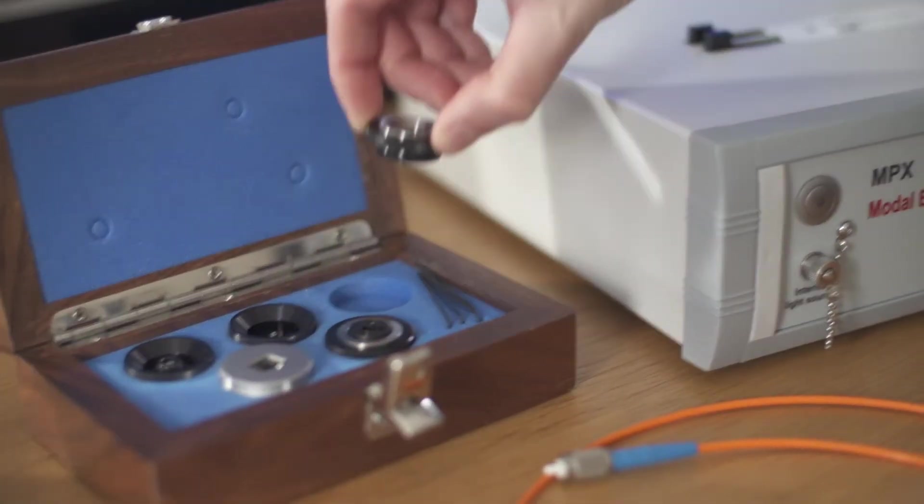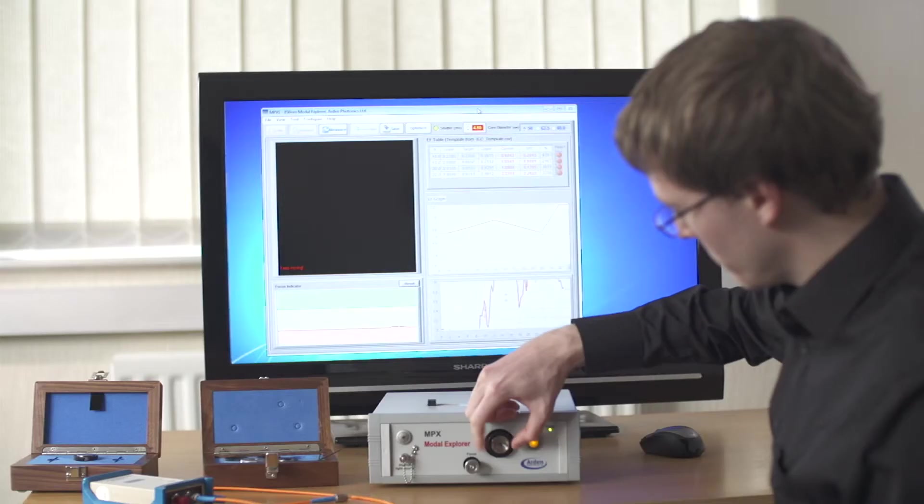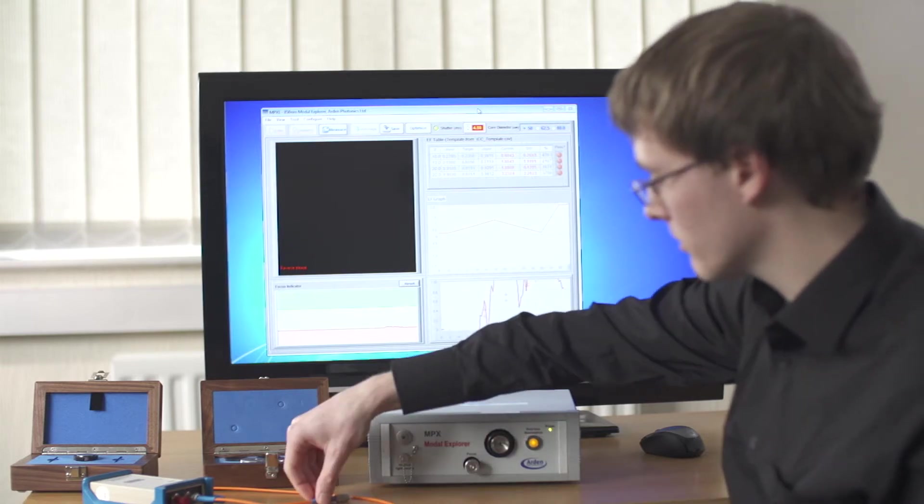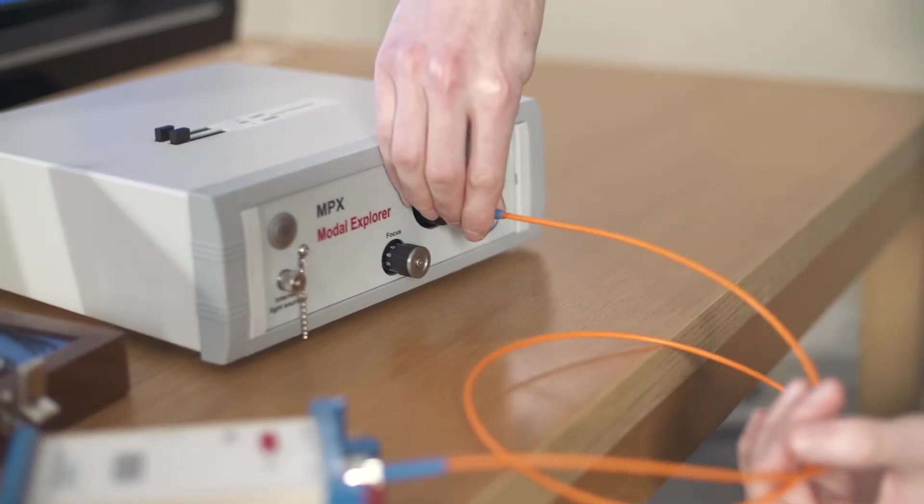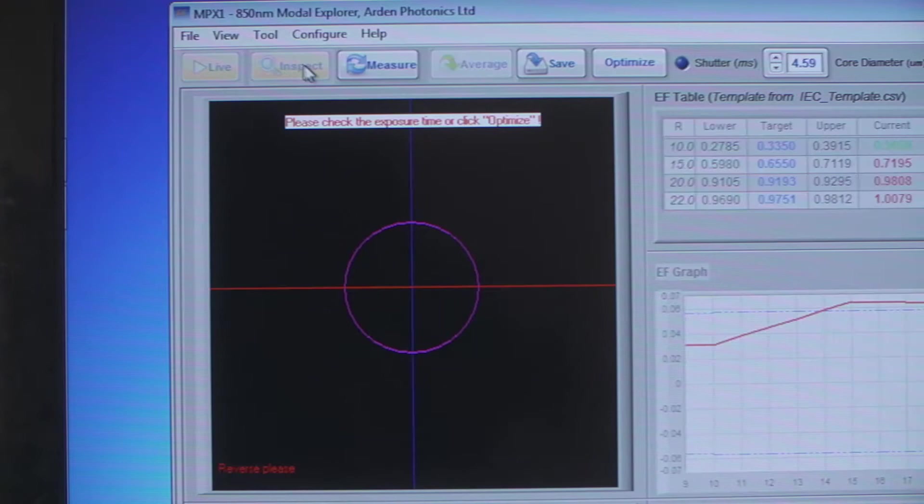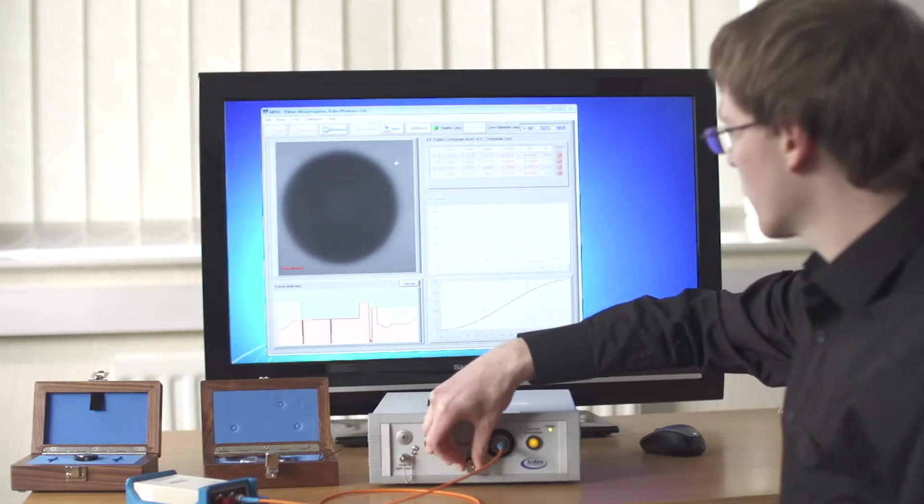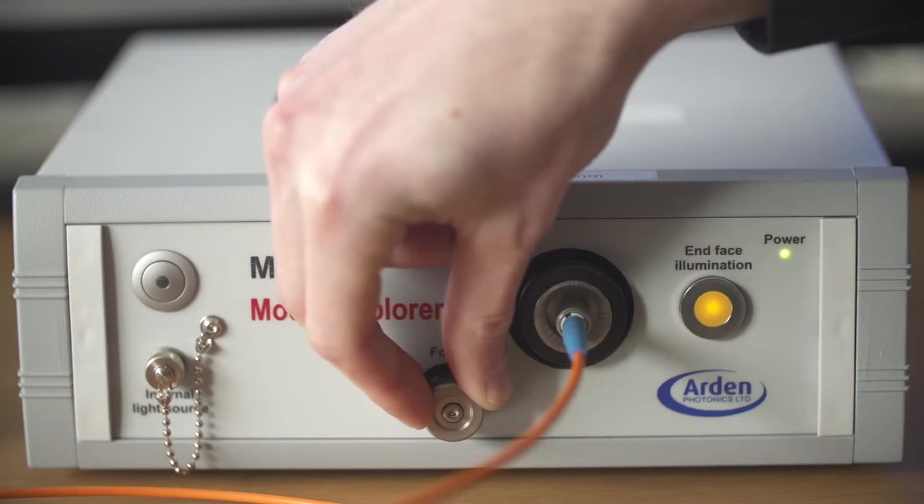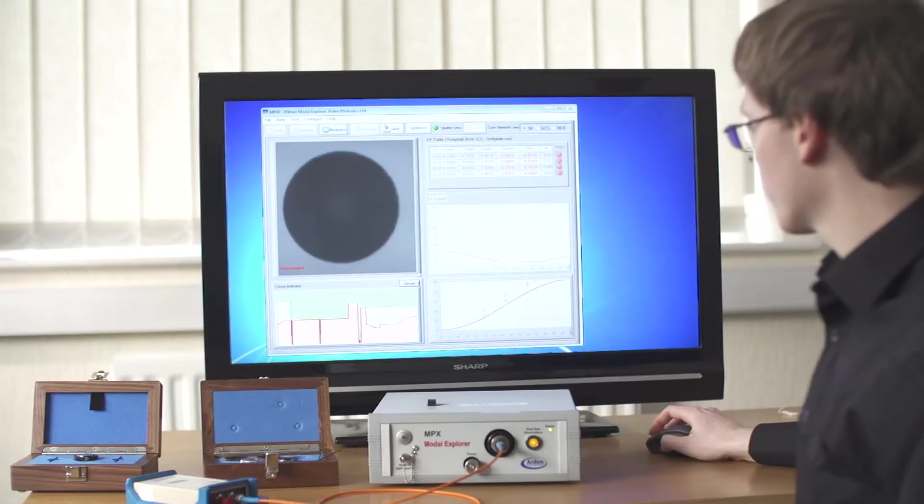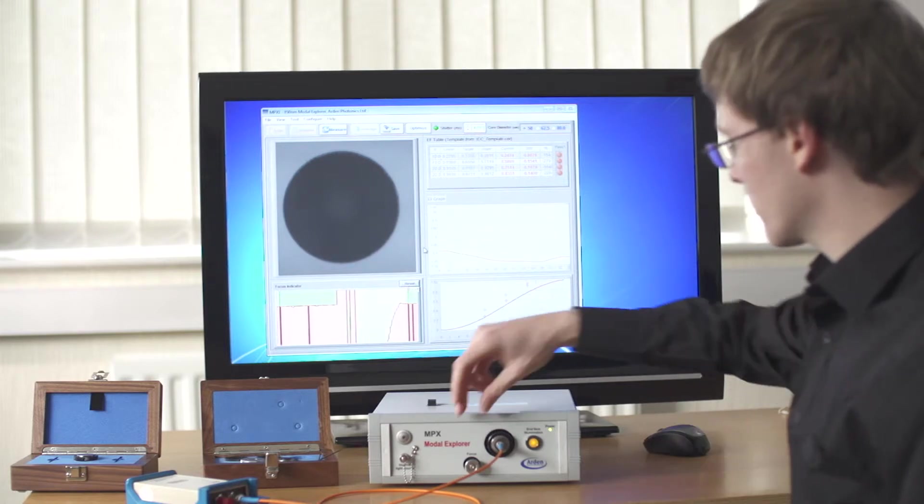The Modal Explorer comes with a variety of adapters to connect your power source to the instrument. Insert the connector into the adapter then switch to inspect mode. Adjust the focus and the indicator ensures you get a precise focus of the end face of the fiber. This is important for the accuracy of the measurement and for better repeatability between different operators.